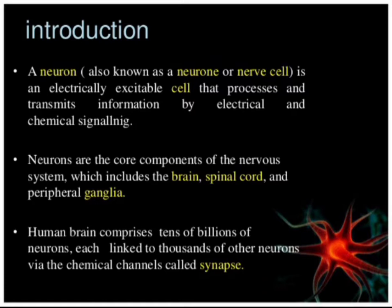The nervous system — we know which organs: brain, spinal cord, and peripheral ganglia. The number of neurons in our body is enormous. The human brain comprises tens of billions of neurons, and every neuron has thousands of connections linked through synapses.